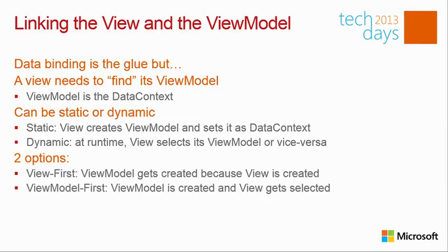How do we link the view and the ViewModel? They do have to know each other because the view needs to bind on the ViewModel. The ViewModel is set as the DataContext for the entire view. You can do this in two ways: a static way, where in your XAML you declare the ViewModel for that view, or a dynamic way where at runtime you push in the ViewModel so the view knows what to bind to.